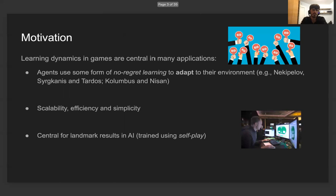In terms of motivation, learning dynamics are central for a number of different applications. From an economics standpoint, there is extensive empirical evidence that agents often use some form of no-regret learning to adapt their behavior in complex strategic environments. In particular, this has been extensively observed in several auction settings. Furthermore, learning dynamics are very simple and very efficient in terms of the per-iteration complexity, and as such they tend to scale remarkably well at very large scale.